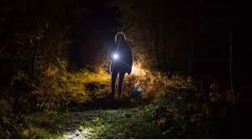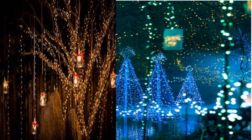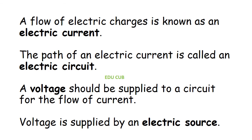You may have used an electric torch when you are going out at night. You can get more light even using an electric torch with more cells. You can use a line of bulbs to illuminate the environment on occasions. Color bulbs can be used to increase the attraction. The bulbs illuminate because an electric source sends a flow of electric charges to them.